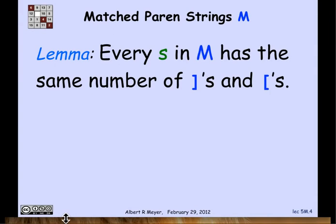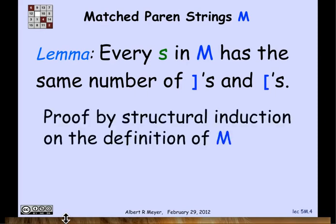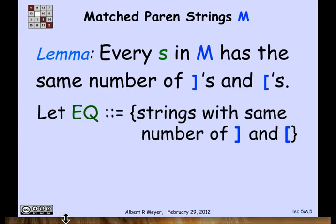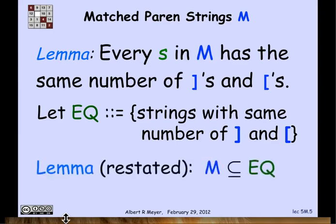Now let's look at a somewhat more interesting example, which was the set M of matching right and left brackets. What I want to prove by structural induction is that every string in M has the same number of left brackets and right brackets. I can restate this by defining EQ to be the set of strings with the same number of right and left brackets. And what I'm really trying to say is that M is a subset of EQ.